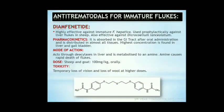Anti-trematodals for immature flukes include thymniaphenide. It is highly effective against immature Fasciola hepatica. Used prophylactically against liver flukes in sheep. Also effective against Dicrocoelium lanceolatum. It is absorbed in the GI tract after oral administration and distributed to almost all tissues; highest concentration found in liver and gallbladder. It acts through deacylases in liver and is metabolized to an amine which causes rapid death of flukes. Dose: sheep and goat 100 mg/kg orally. Temporary loss of vision and loss of wool at higher doses can be seen.